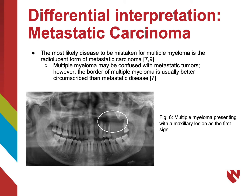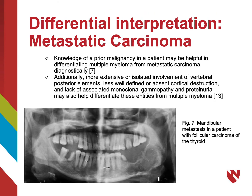The disease most likely to be mistaken for multiple myeloma is metastatic carcinoma. While multiple myeloma may be confused with metastatic tumors, its borders are usually better circumscribed than metastatic disease. Knowledge of prior malignancy may be helpful in differentiating the two diagnostically. Metastatic carcinomas usually present with more extensive or isolated involvement of vertebral posterior elements, less well-defined or absent cortical destruction, and lack of monoclonal gammopathy and proteinuria.